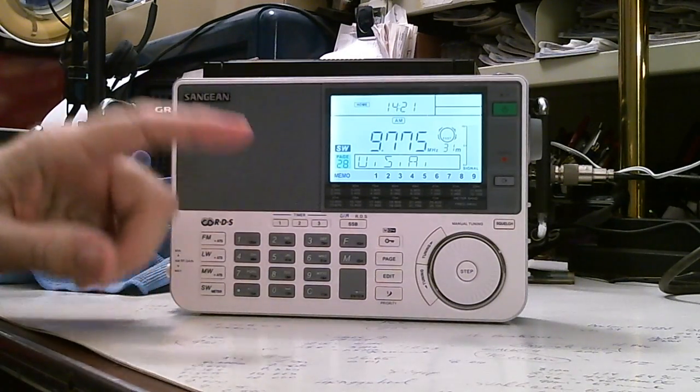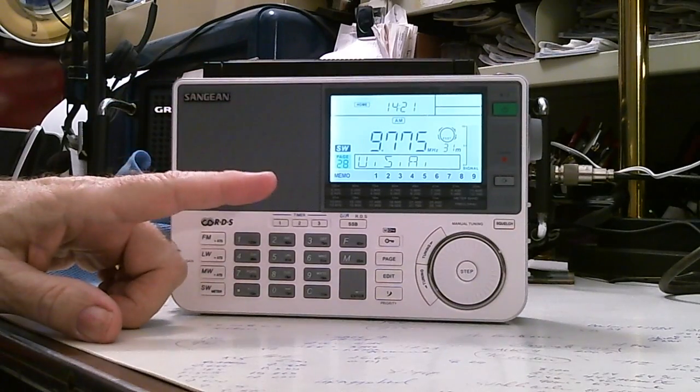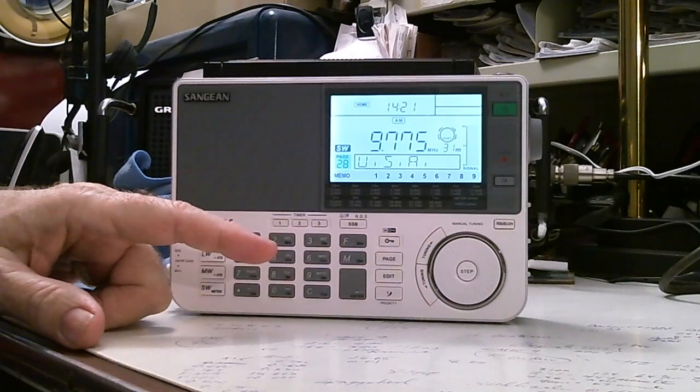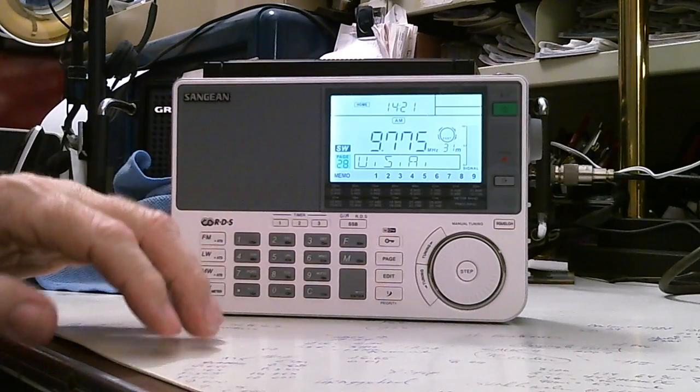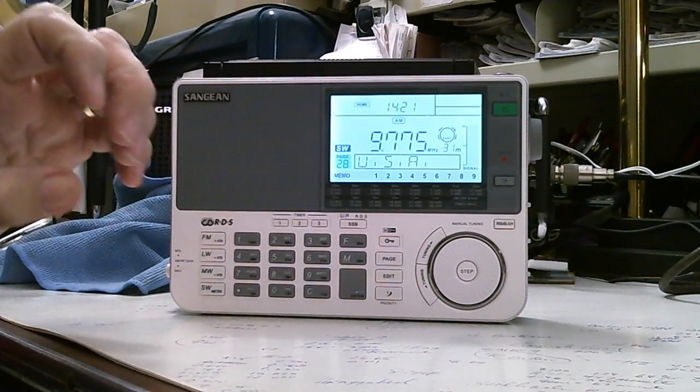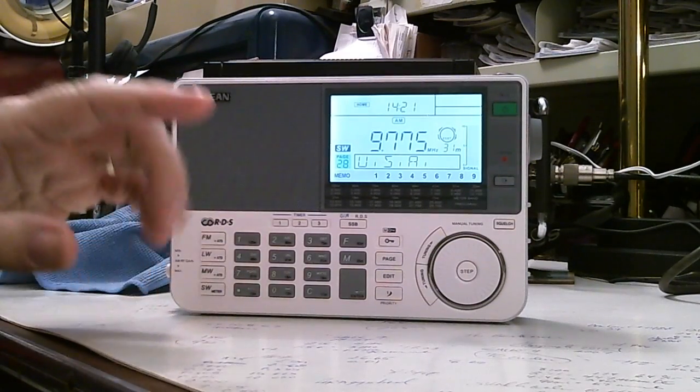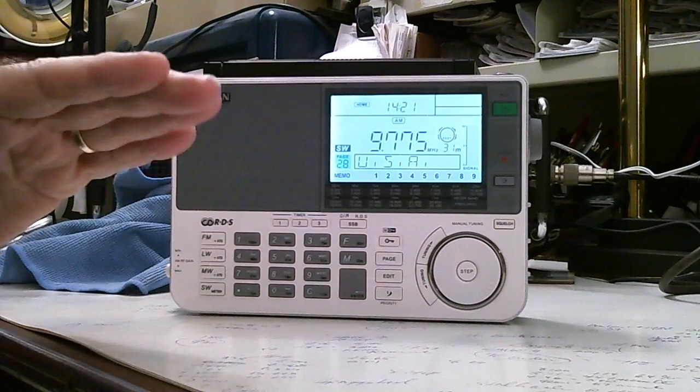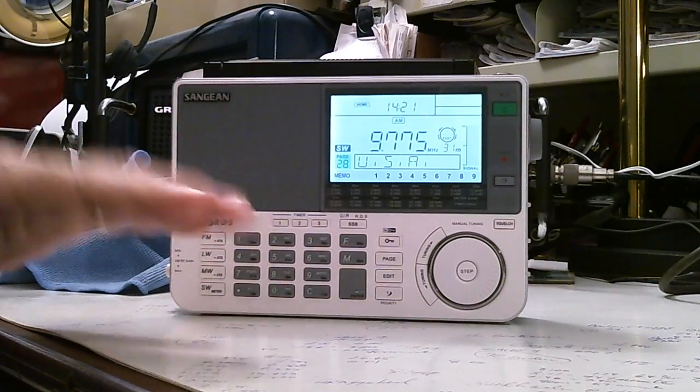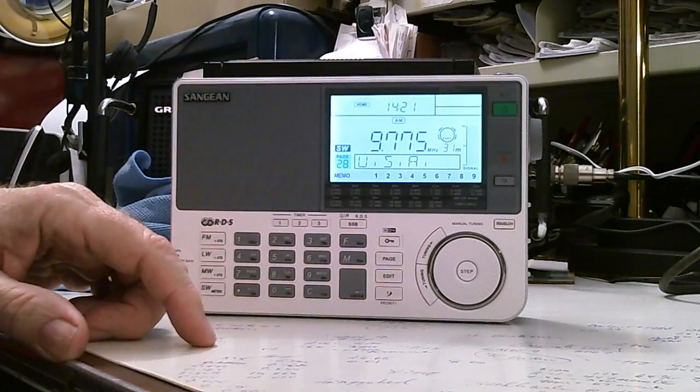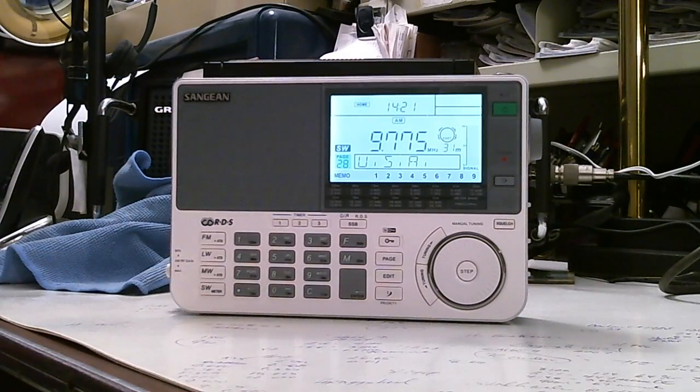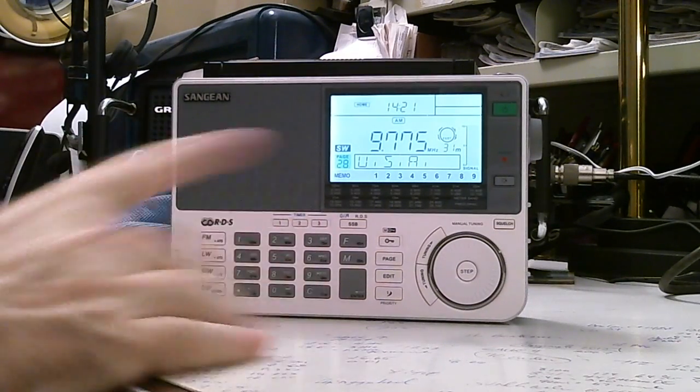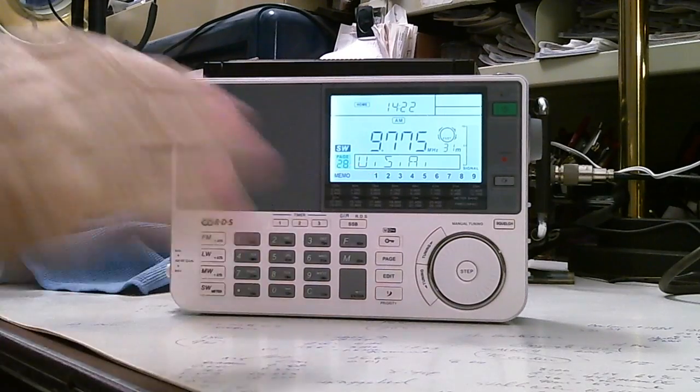It comes with preset stations, stations already put in the memories. Matter of fact, 409 preset memories. Now granted, some of these stations when this radio came out were popular, not so much now. Some of them have gone off the air, but it gets you a starting point. So you can turn on the radio and go through those memory locations and start listening to shortwave radio. You can overwrite those presets, they're not permanent, so you can put in your own stations.